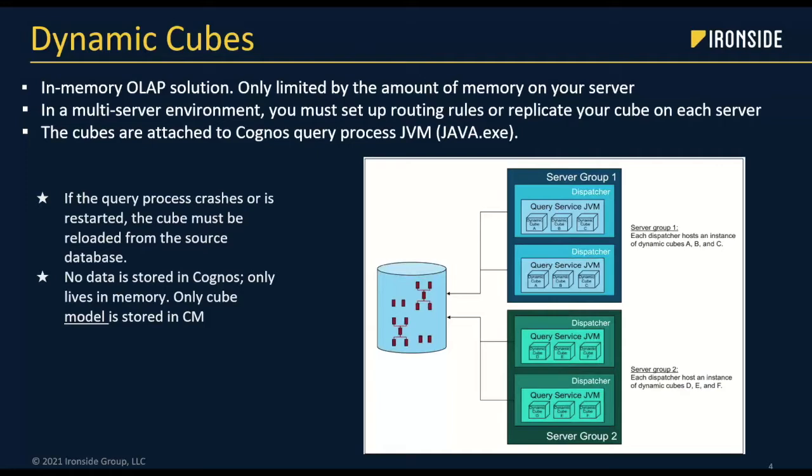We're going to compare and contrast the two main leading tools for in-memory caching in Cognos: Dynamic Cubes and data sets. Dynamic Cubes has been around for quite some time — at least 10 plus years now. I want to talk about the different architectures between the two solutions.